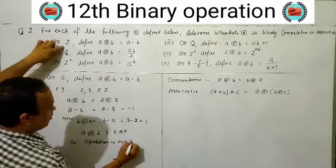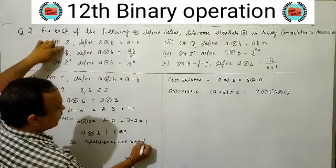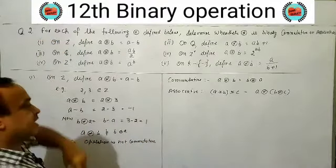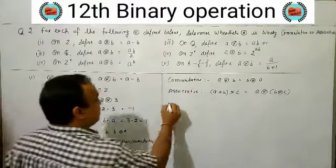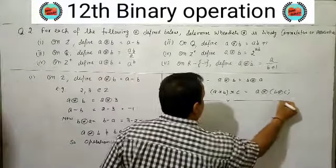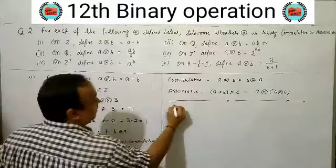So the first binary operation: a★b = a-b is not commutative. Now we will check associative.